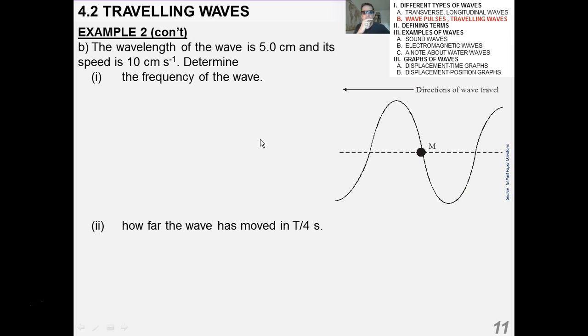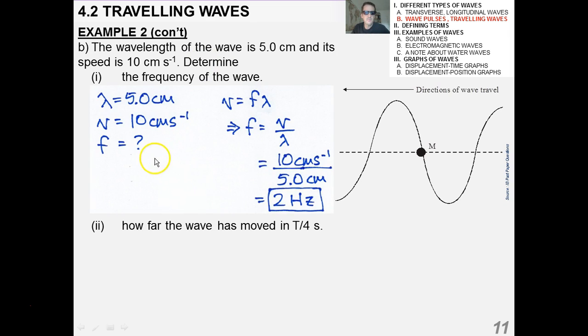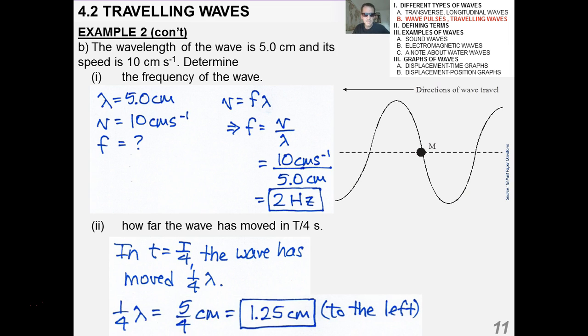Same example. The wavelength is 5 centimeters, and its speed is 10 centimeters per second. What's the frequency? This is the wave equation, which I've alluded to previously. And this is really, the speed is equal to the wavelength over the period, or in other words, frequency times the wavelength. I got 2 hertz. How far has the wave moved in T over 4 seconds? In T over 4, the wave has moved, as I alluded in the past slide, to lambda over 4. If the wavelength is 5 centimeters, then that's one-fourth of 5, which is 1.25 to the left.